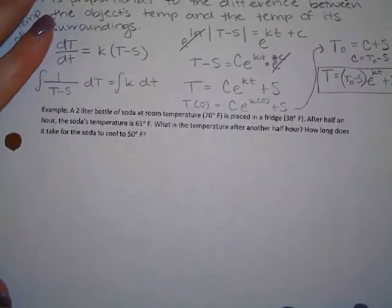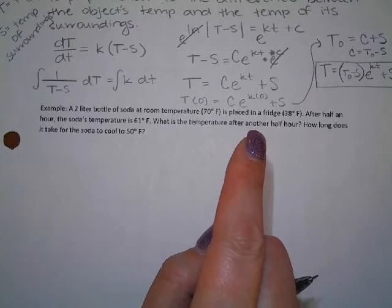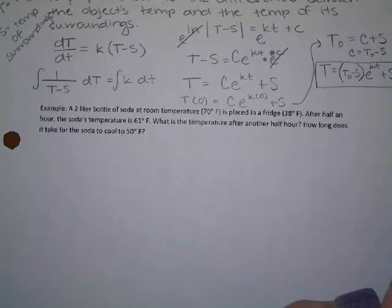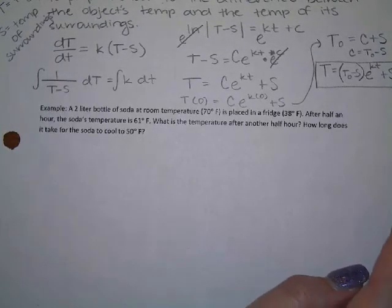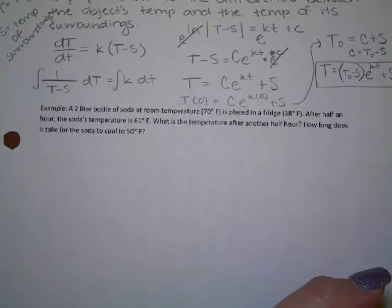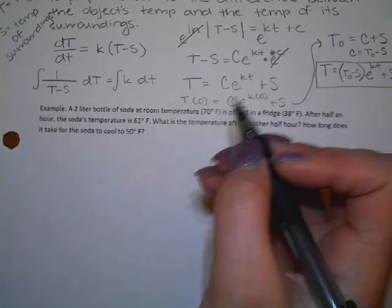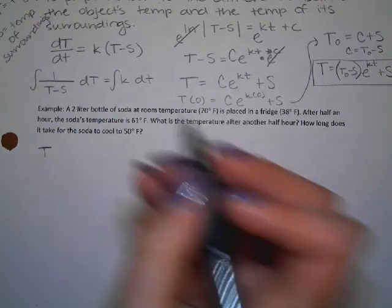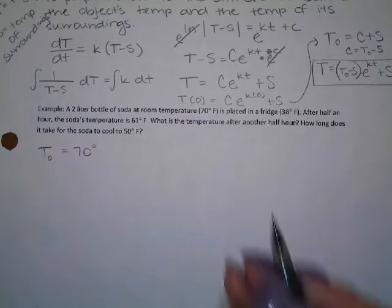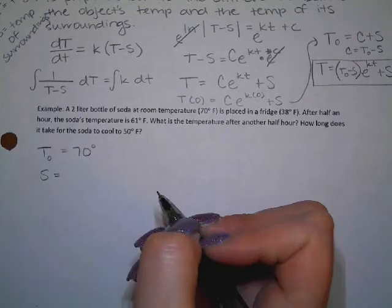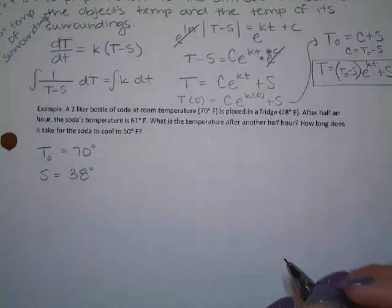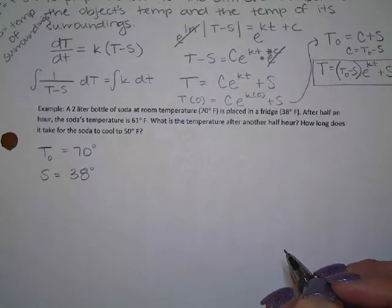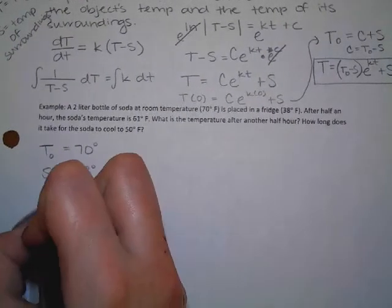Okay, so here's our example. A 2-liter bottle of soda at room temperature is placed in a fridge that is 38 degrees Fahrenheit. After half of an hour, the soda's temperature is 61 degrees Fahrenheit. What is the temperature after another half hour? How long does it take for the soda to cool to 50 degrees Fahrenheit? So, we have a starting temperature. What is the starting temperature? 70 degrees. We have the surroundings. What are the surroundings? 38 degrees.